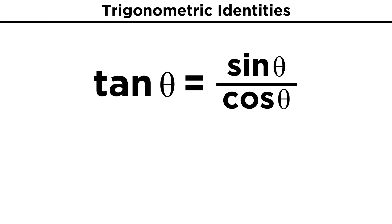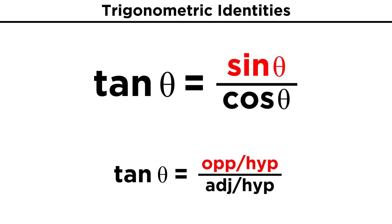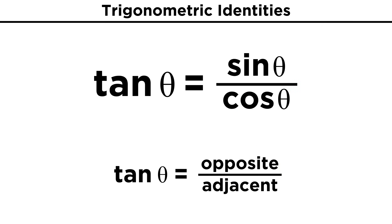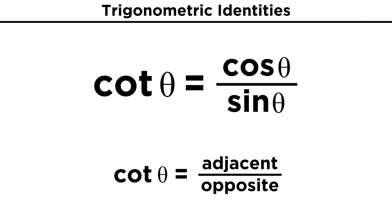Another identity we should be aware of is that tangent is equal to sine over cosine. This is true because if sine is opposite over hypotenuse, and cosine is adjacent over hypotenuse, then the hypotenuses cancel, and we are left with opposite over adjacent, which is the definition of tangent. Likewise, since cotangent is the reciprocal of tangent, that means that cotangent equals cosine over sine.